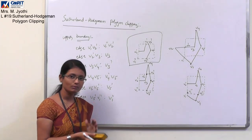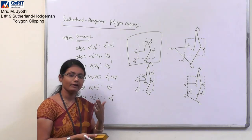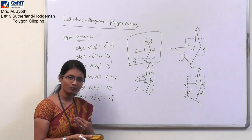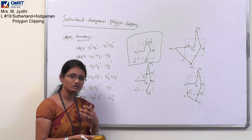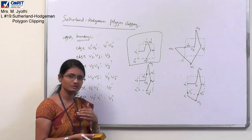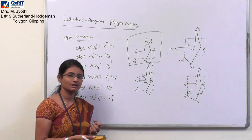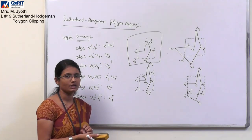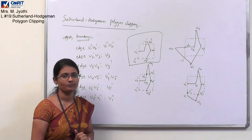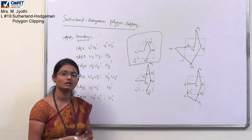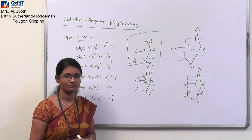Remember: you need to process each and every boundary, and for each boundary, traverse through all the vertices. For each traversal, consider only the new vertices to clip against that boundary. This is how the Sutherland-Hodgeman polygon clipping algorithm works. Thank you.